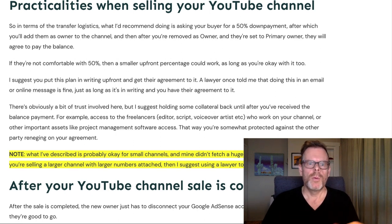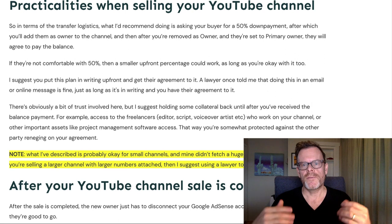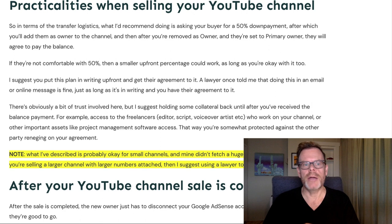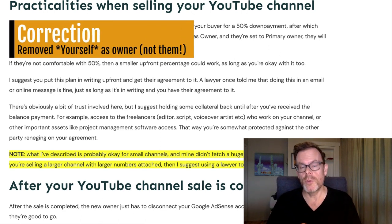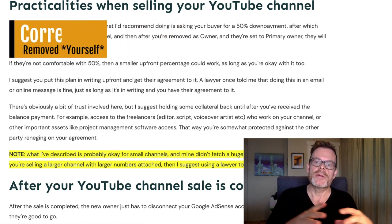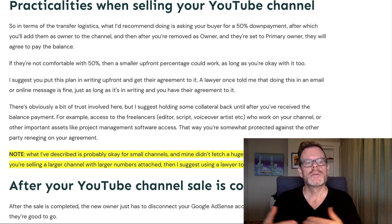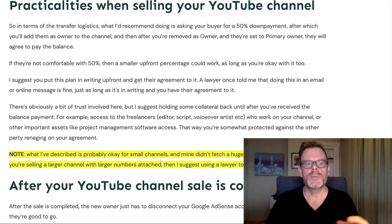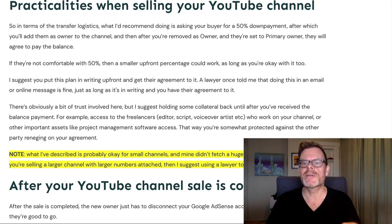Now let's cover a few practicalities in the logistics of selling your YouTube channel. What I'd recommend is asking your buyer for a 50% down payment, after which you'll add them as owner to the channel. Then after you remove yourself and they're set to primary owner, they will agree to pay the balance. If they're not comfortable with 50%, a smaller upfront percentage could work as long as you're okay with that too. I suggest you put this plan in writing upfront to get their agreement — a lawyer friend once told me that doing this in an email or online message is fine, as long as it's in writing somewhere and you have their agreement.